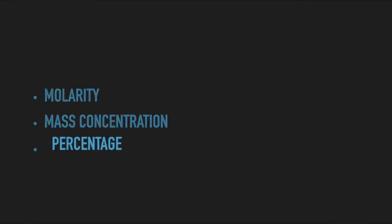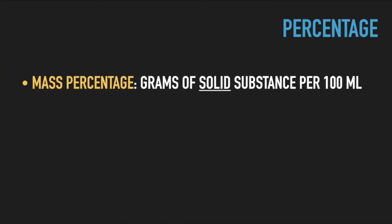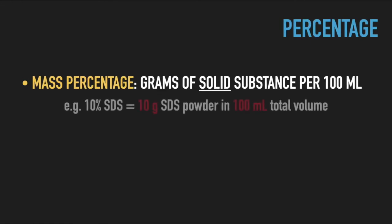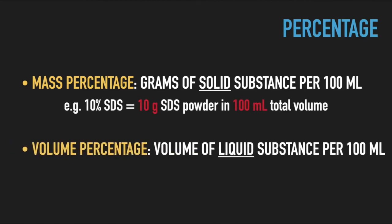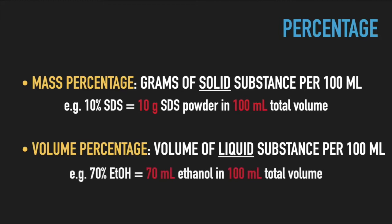Concentration is sometimes expressed as mass or volume percentage. By convention, mass percentage — expressed in grams of substance per 100 ml solution — is used for powdered chemicals. For example, 10% SDS solution refers to 10 g SDS powder per 100 ml. Volume percentage — expressed in ml of substance per 100 ml solution — is used for liquid chemicals. Thus, 70% ethanol refers to 70 ml alcohol per 100 ml total volume.